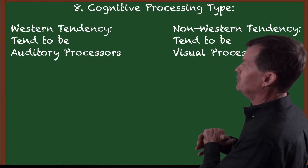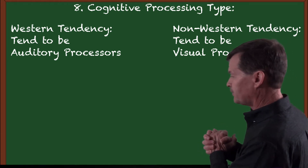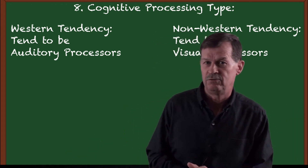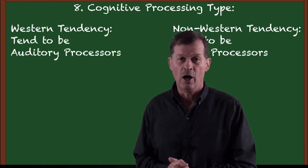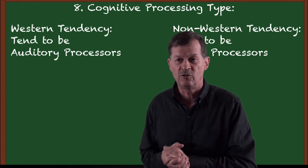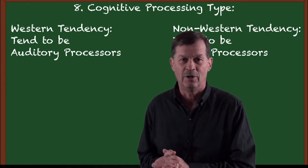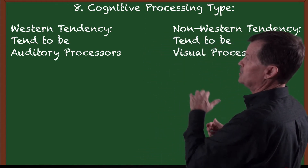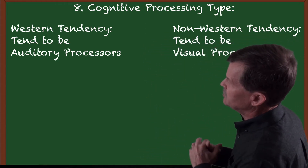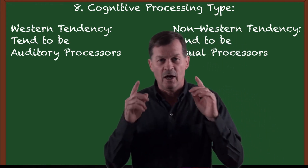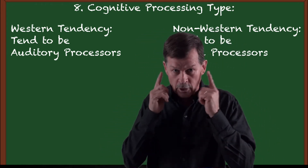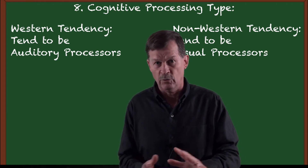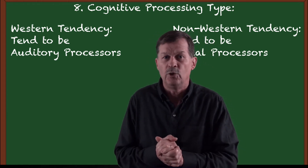Number eight: cognitive processing type. This is a very important one — it was the centering of my research for my educational degree. The Western tendency is to be auditory processors, processing through the ear, and we are trained that way. I was trained through the ear.